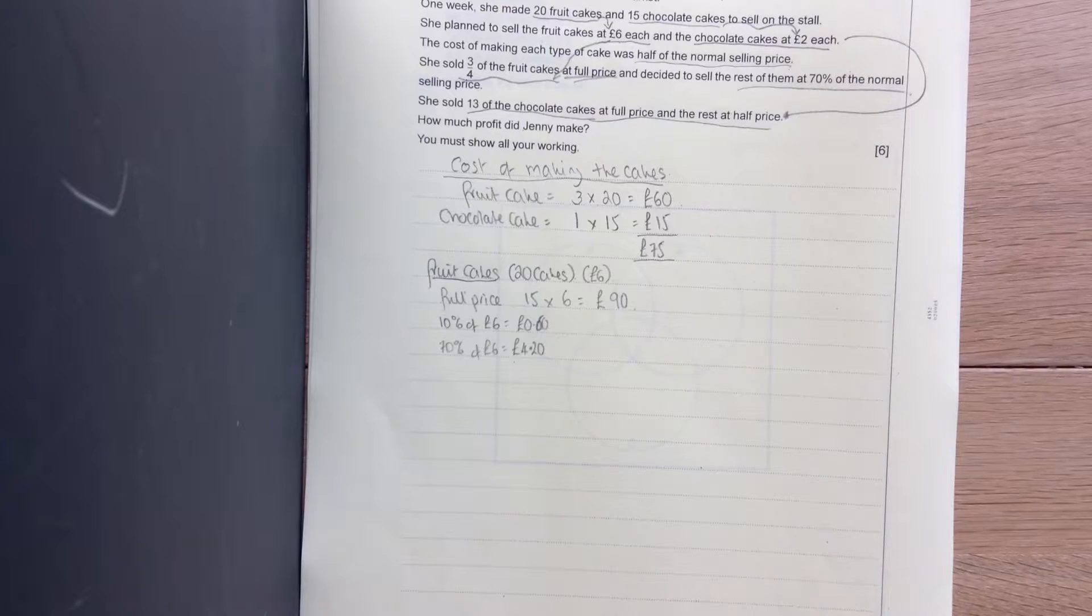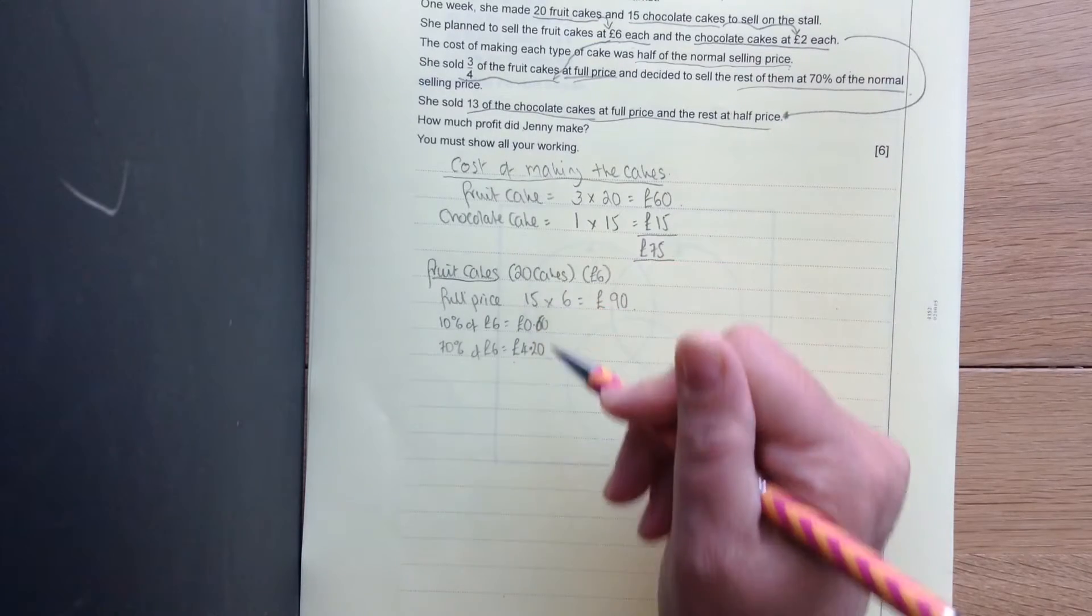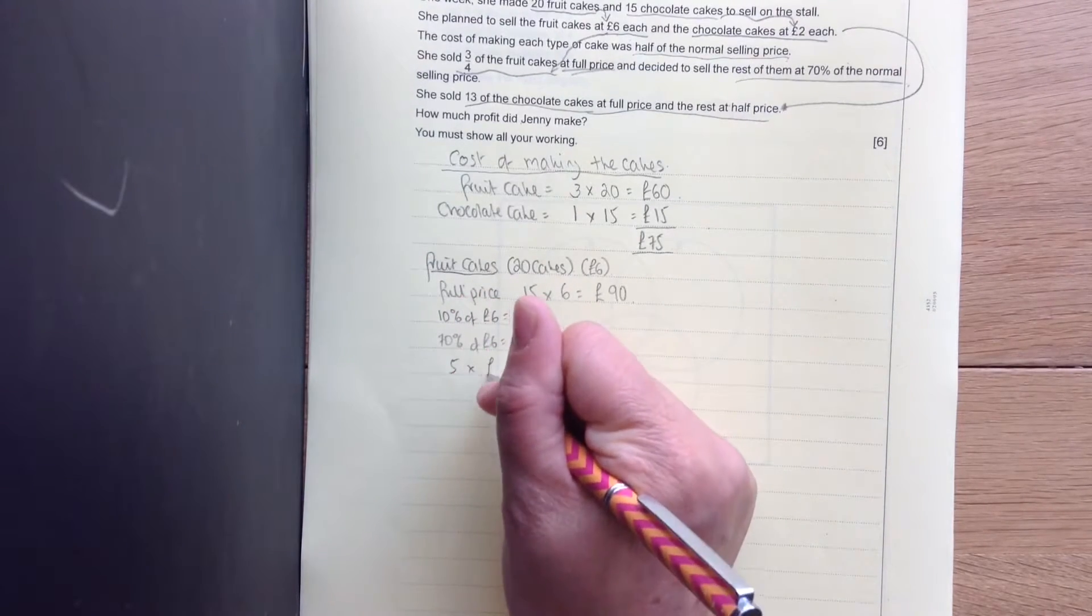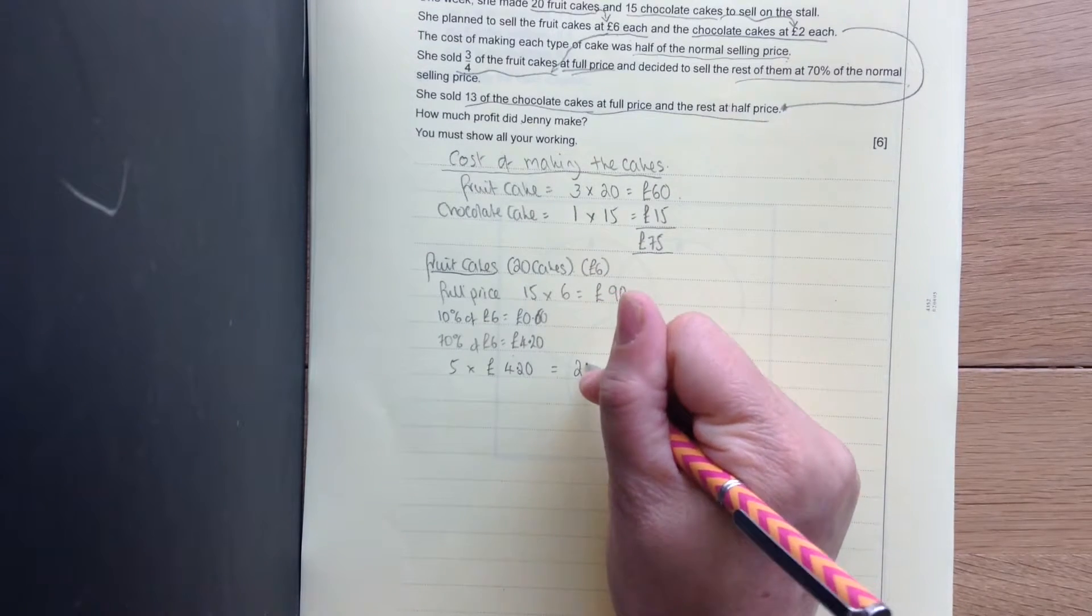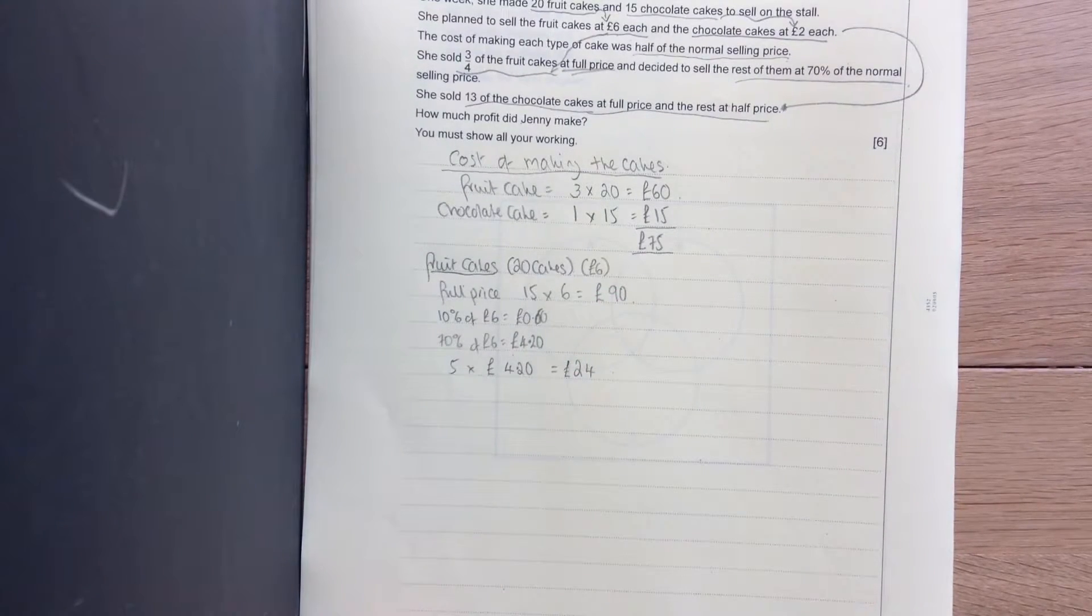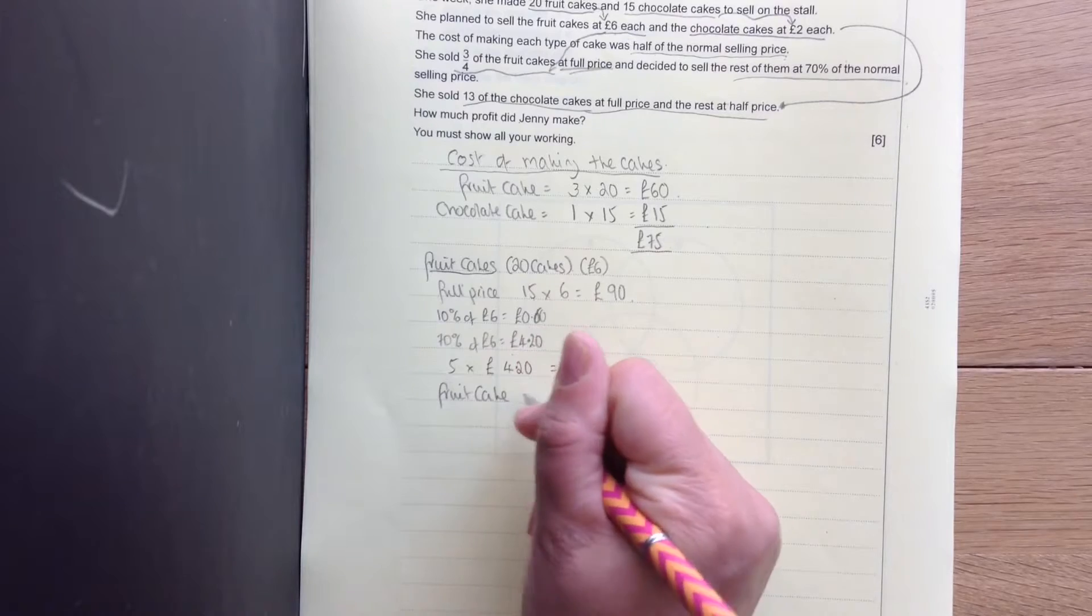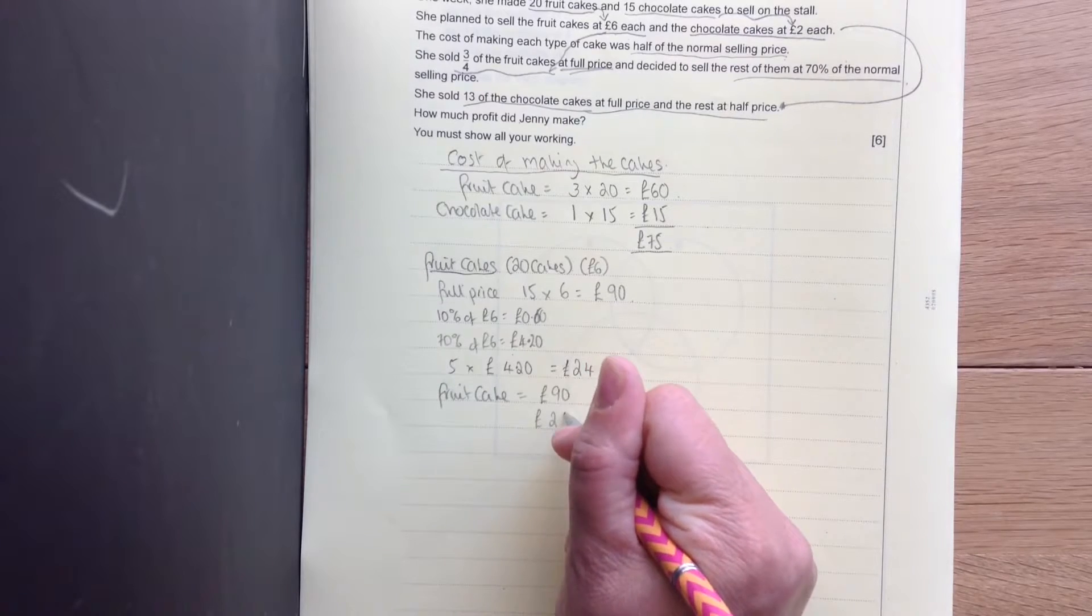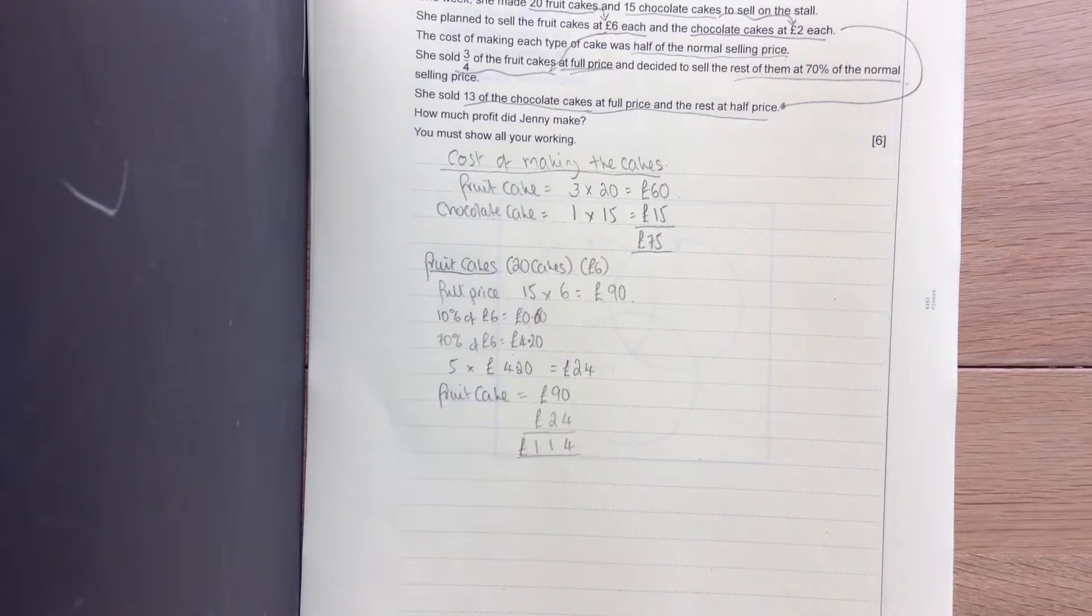And she sold five of those cakes because she sold 15 at full price. So five cakes were sold at £4.20. So five times £4.20. Well, ten times £4.20 is £42. Half of that is £21. So the total costing on the fruit cake then is she sold £90 worth and £21 worth. So all together, she had £111 in selling fruit cake.